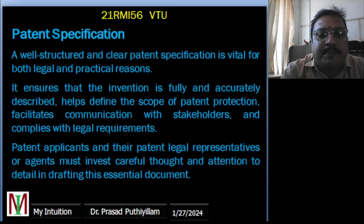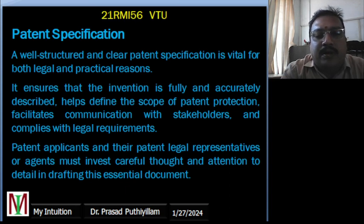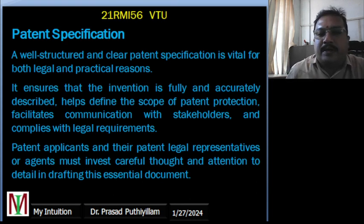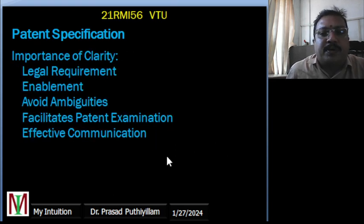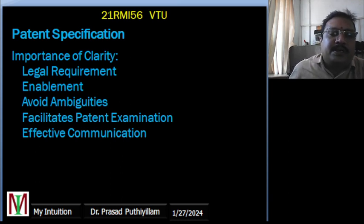Patent applicants and their legal representatives — the ones applying for the patent — can do it themselves if they have done it many times. Otherwise, it is better to take the assistance of a patent legal representative, an official working in the same field or an agent who is an expert in that field. They also have to work very carefully because clarity is very important. The key aspects of importance of clarity are: legal requirement, enablement, avoiding ambiguity, facilitating patent examination, and effective communication.